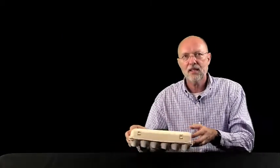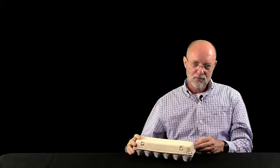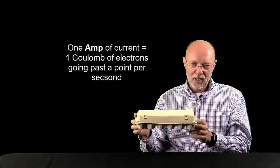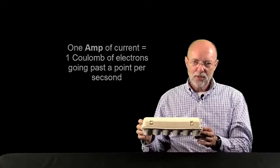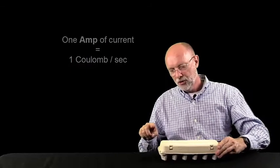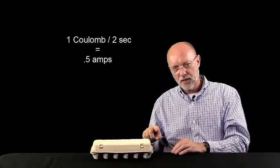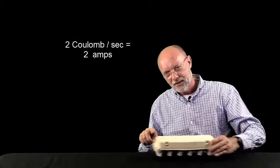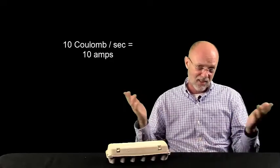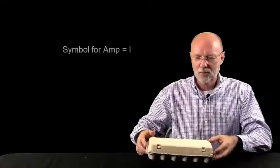So, let's take a look now at our second definition, the amp. If I take this Coulomb now, and I let it move. So, now we go from potential energy to kinetic energy. If I have one Coulomb, and it moves past a certain point in one second, we say we have one amp of current. So, an amp of current is simply one Coulomb going by a point per second. So, if it takes two seconds for a Coulomb's worth of electrons to go by, I would only have half an amp. If I could get two Coulombs to go by in one second, I would have two amps. If I can get ten Coulombs to go by in one second, I got ten amps. So, again, that's how we come up with the amp. Not too hard.